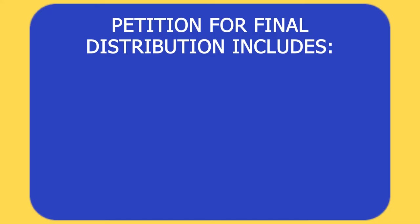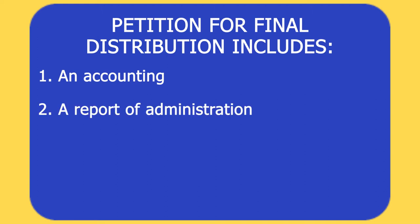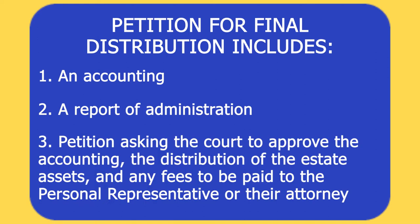The petition for final distribution is prepared in legal pleading format and generally includes three parts. First, an accounting, unless waivers have been signed by everyone entitled to distribution. Second, a report of administration including a complete summary of the actions the personal representative has taken in their role to administer the estate. Third, the petition should ask the court to approve the accounting if one was filed, approve the distribution of the estate assets, and approve any fees to be paid to the personal representative or their attorney.